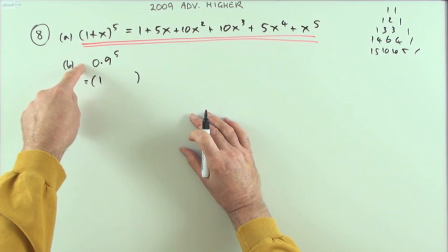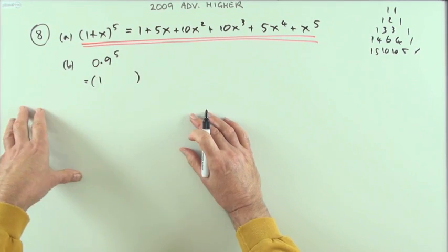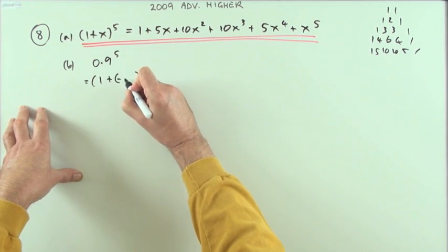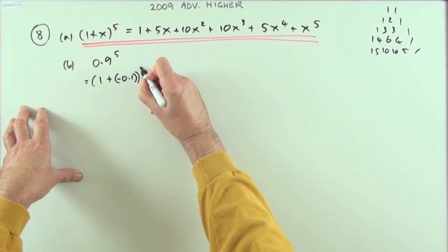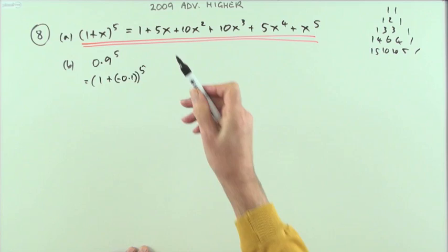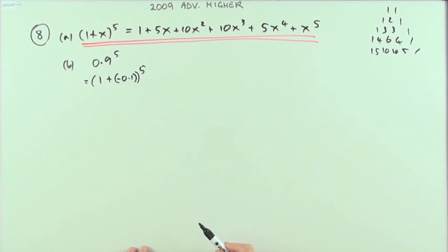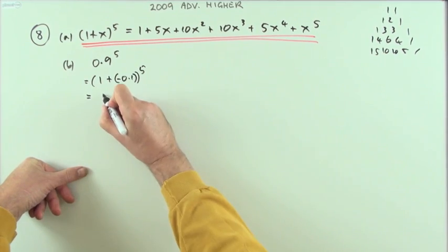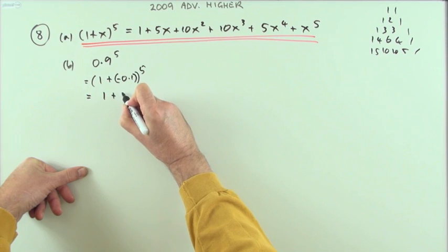So I'm going to write it as 1 - I can break it into two parts: 1 take away 0.1, but to make it look like that I think I'll write 1 plus negative 0.1 to the power 5. So each of these x's is going to be replaced by a negative 0.1.